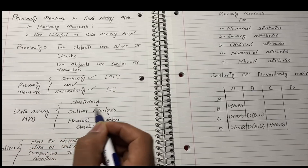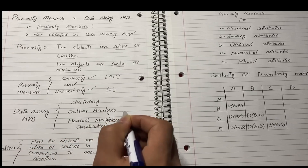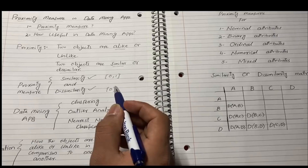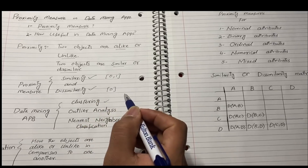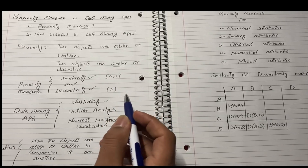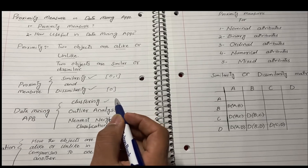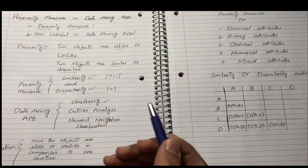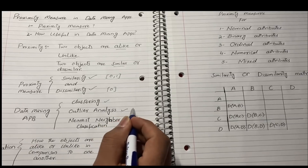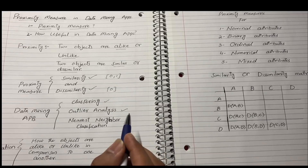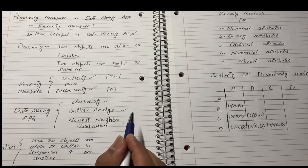In data mining applications, we have clustering, outlier analysis, and nearest neighbor classification. In clustering, we use proximity measures to find which objects are of a similar kind. In outlier analysis, if you want to know what is an outlier in the given data, we use proximity measures to figure out if any objects are matching or not matching with the other data — if not, we can say that object is an outlier.